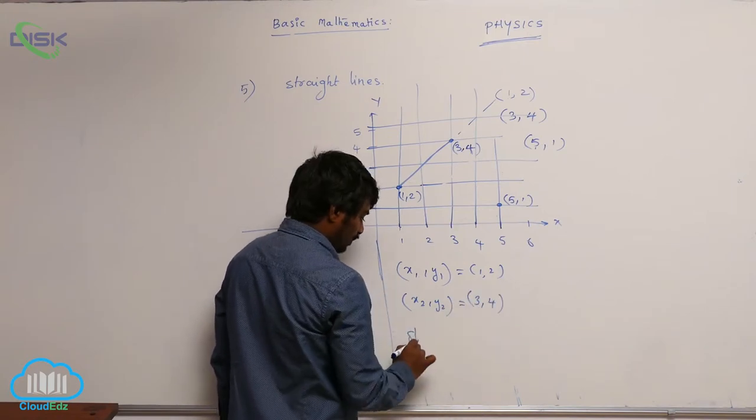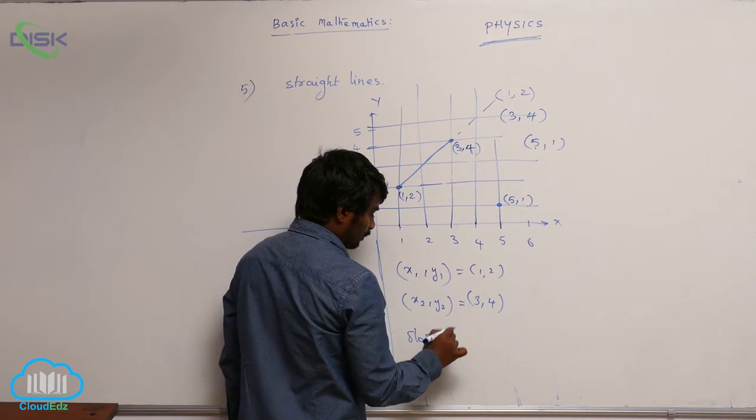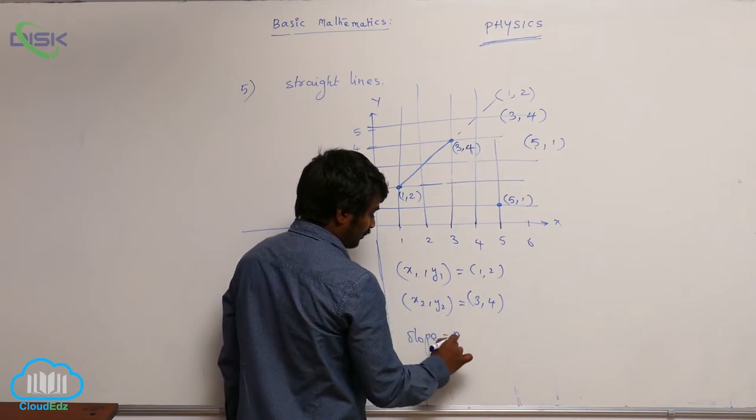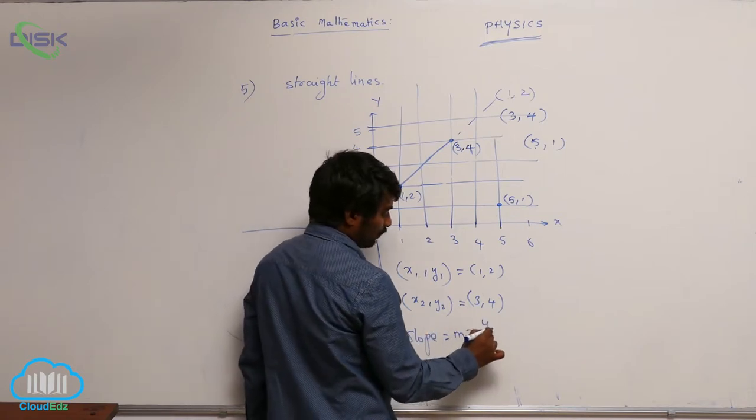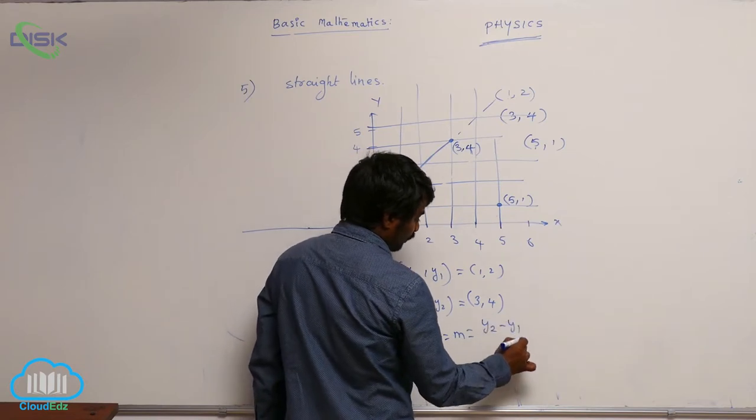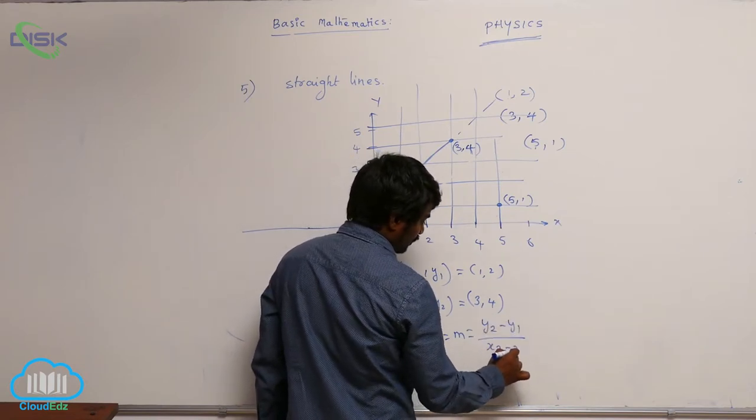So slope of any straight line is equal to m. You represent with m, that is equal to the formula you know: y2 minus y1 by x2 minus x1.